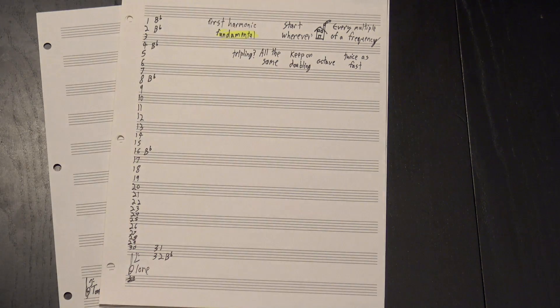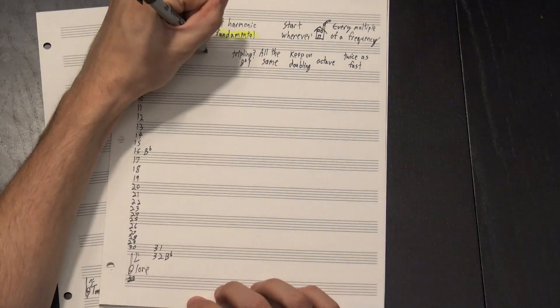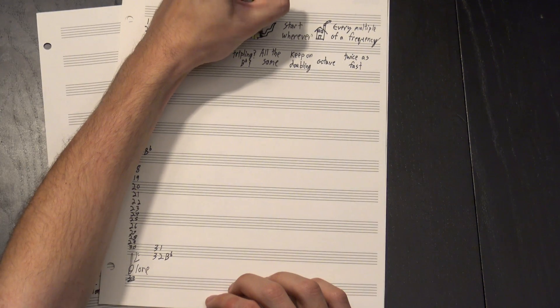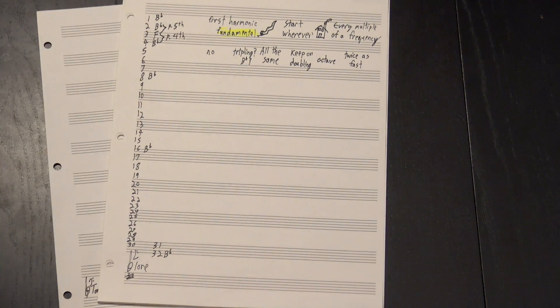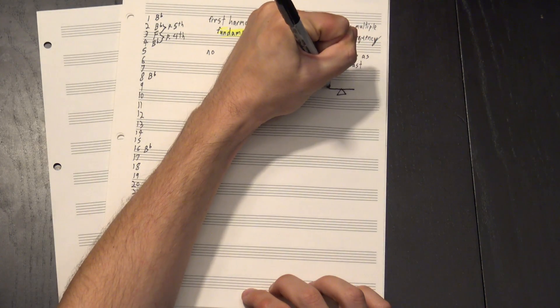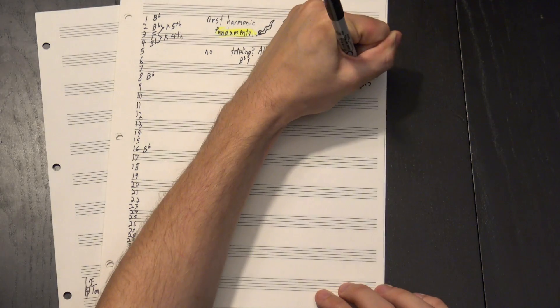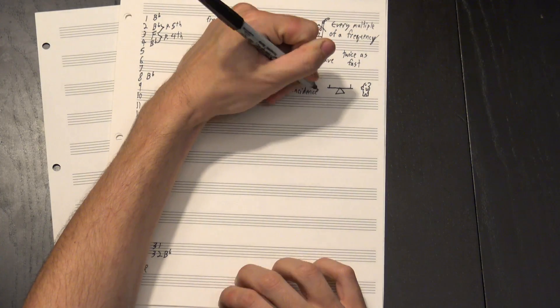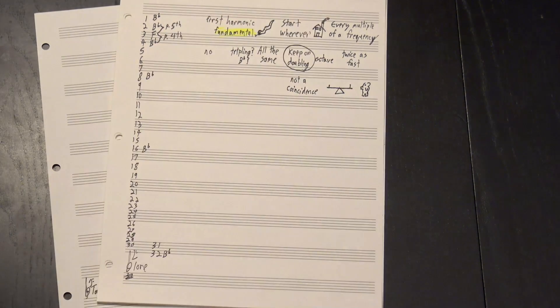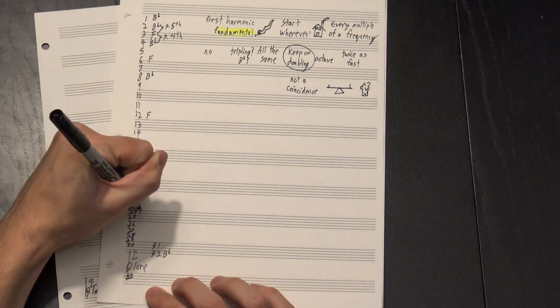But what about tripling? That's not a Bb too, is it? No, as it turns out, if you triple the frequency of a Bb, you get an F. Notice that this interval is a perfect fifth, and this one's a perfect fourth. Those are the two most stable intervals besides the octave. I don't want to dive too far into the implications of that right now, but suffice it to say that that's not a coincidence. And of course, we can keep doubling our third harmonic to find more Fs in higher octaves, too.